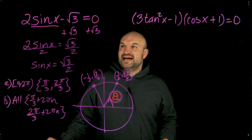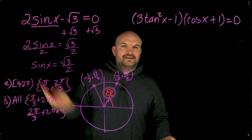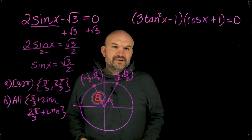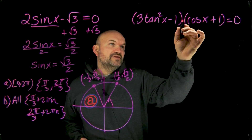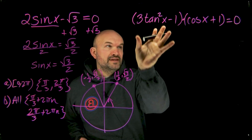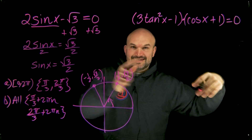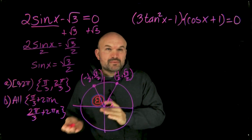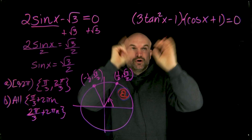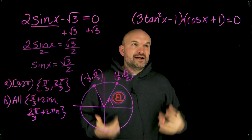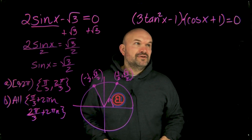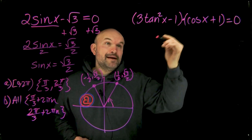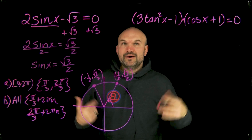Now let's look at a problem where we can't just add and divide. In this case we can't use inverse operations right away because there's multiplication inside parentheses, but I do recognize something: I have a product equal to zero. When you have a product equal to zero, you can apply the zero product property. Remember back in algebra when we factored a trinomial into two factors and set each factor equal to zero? That's the zero product property. All we need to do is set each factor equal to zero and then solve.